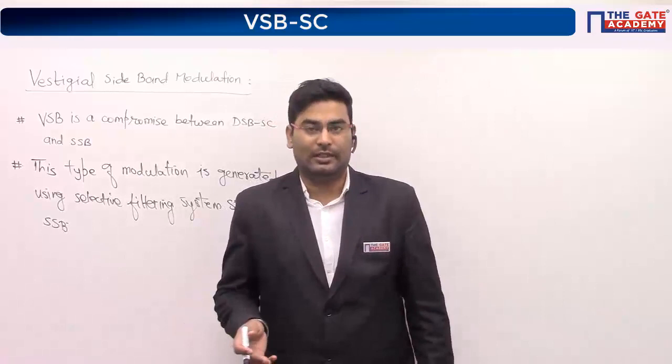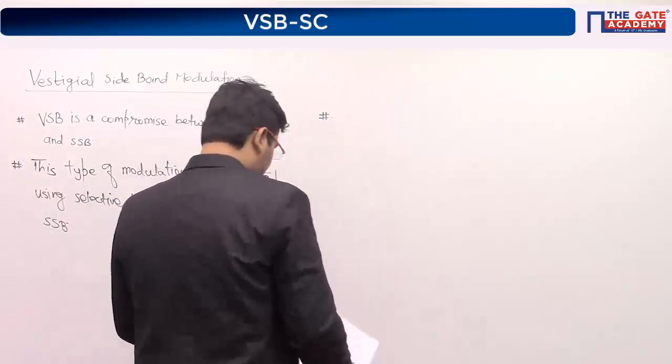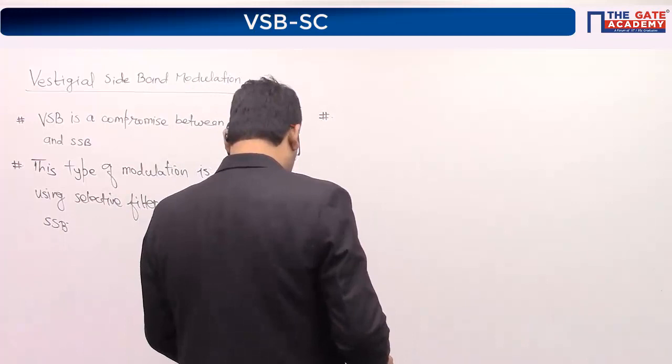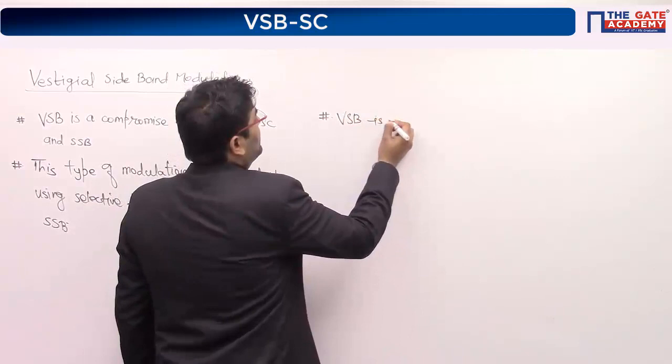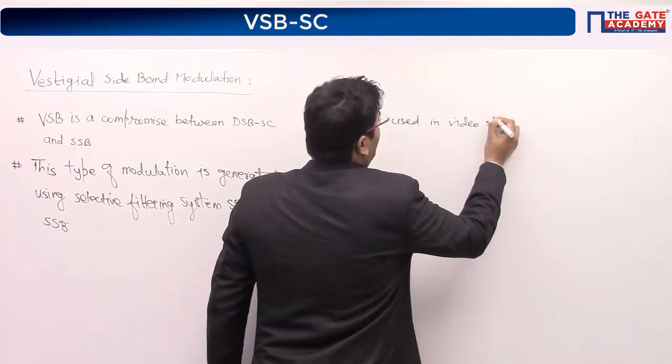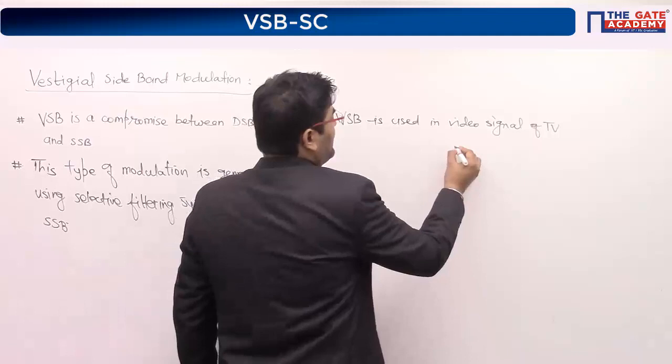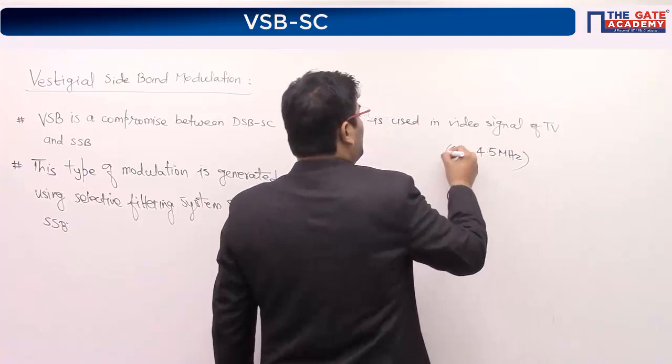Third point: VSB is used in video signals of television (TV), with a frequency range of 0 to 4.5 MHz — that is the frequency range mentioned in the very first session.